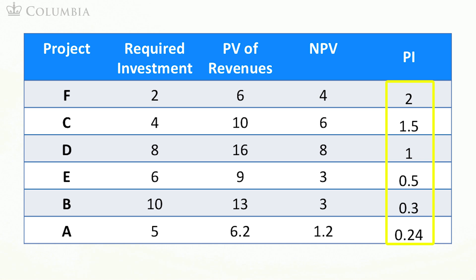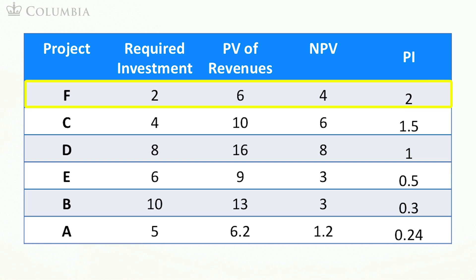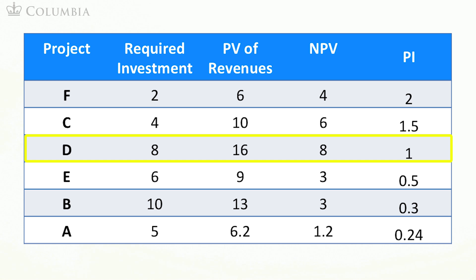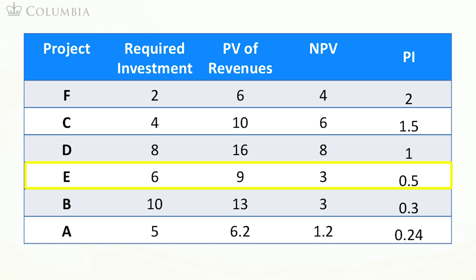We first pick the project with the highest profitability index, that is project F, which requires an investment of $2 million. We have additional funds, so we pick the next project in the table, project C, requiring $4 million, bringing our cumulative investment to $6 million. Next, we add project D, bringing the cumulative investment to $14 million. Finally, we take project E, bringing our cumulative investment to $20 million, so we can no longer take any other projects.